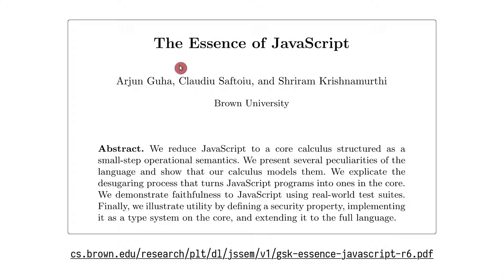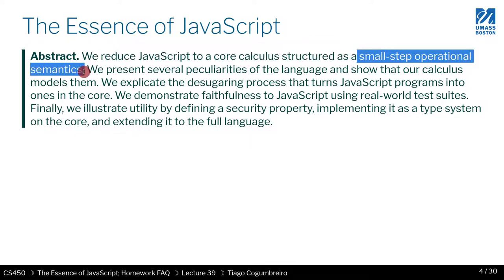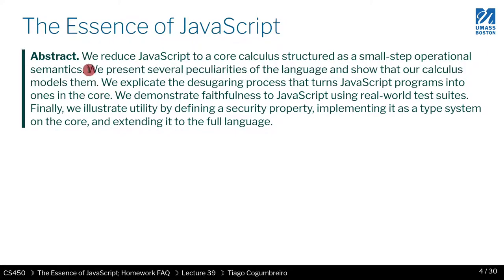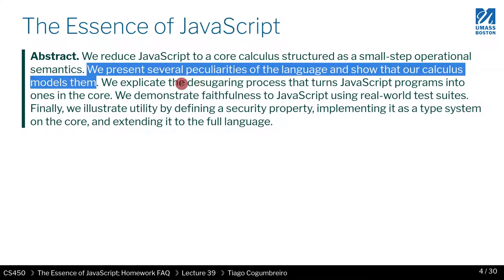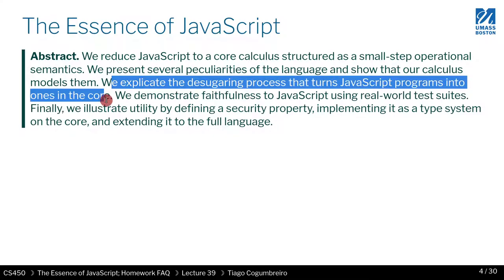The article that we're covering is 'The Essence of JavaScript' by authors from Brown University where the idea is to reduce JavaScript to a core calculus structured as a small step operational semantics. These are just the formal rules that you've learned. They're slightly different but if you squint your eyes they kind of look the same. We explicate the desugaring process that turns JavaScript programs into ones in the core, and by core they mean the core language lambda.js.